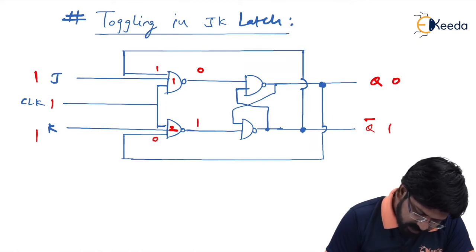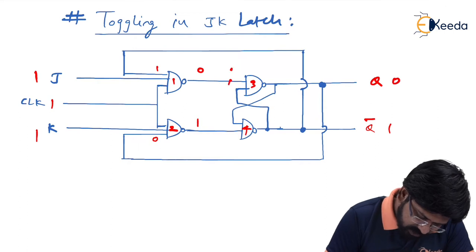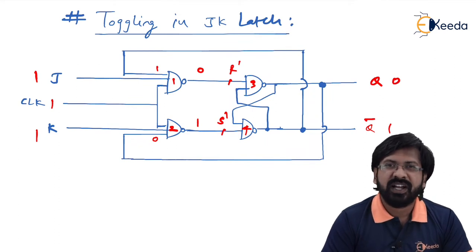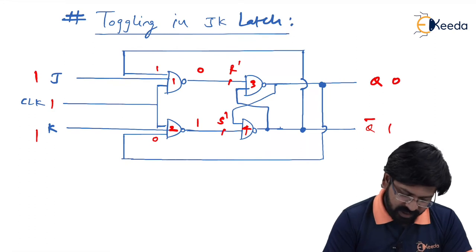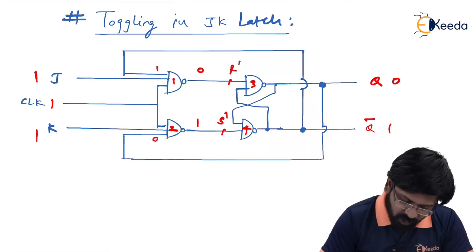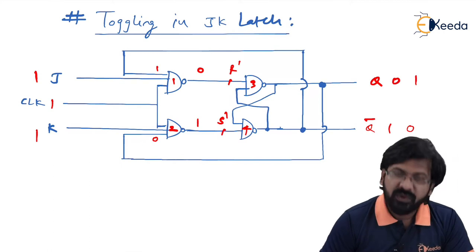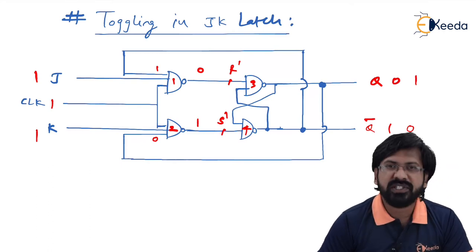If you remember, gates 3 and 4 form the basic NAND latch, called R-dash S-dash or RS latch. When R-dash=0 and S-dash=1, the latch goes into set condition. According to set condition, the new output Q is 1 and new Q_bar is 0. So Q and Q_bar are now complemented — Q was 0 and has become 1, and Q_bar was 1 and has become 0.